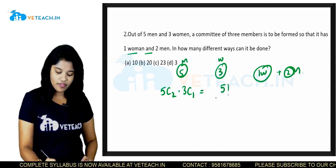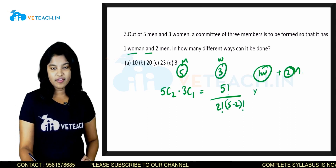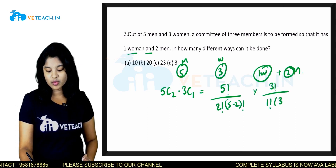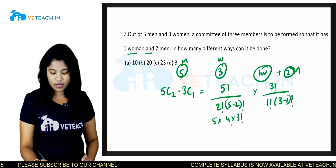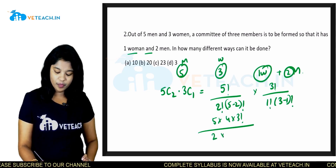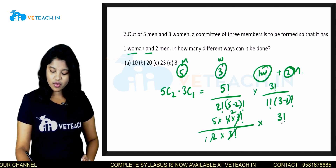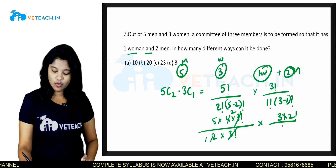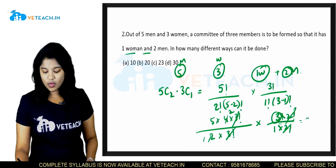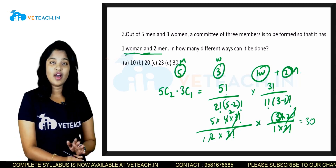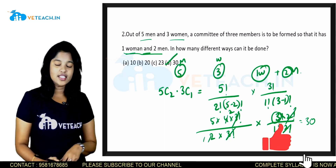5C2 equals 5! divided by (2! × 3!) and 3C1 equals 3! divided by (1! × 2!). Computing: 5×4×3! divided by 2×3! equals 10, and 3×2! divided by 1×2! equals 3. So 10 × 3 = 30. In 30 different ways we can select 1 woman and 2 men out of 5 men and 3 women. Option D is our correct answer.